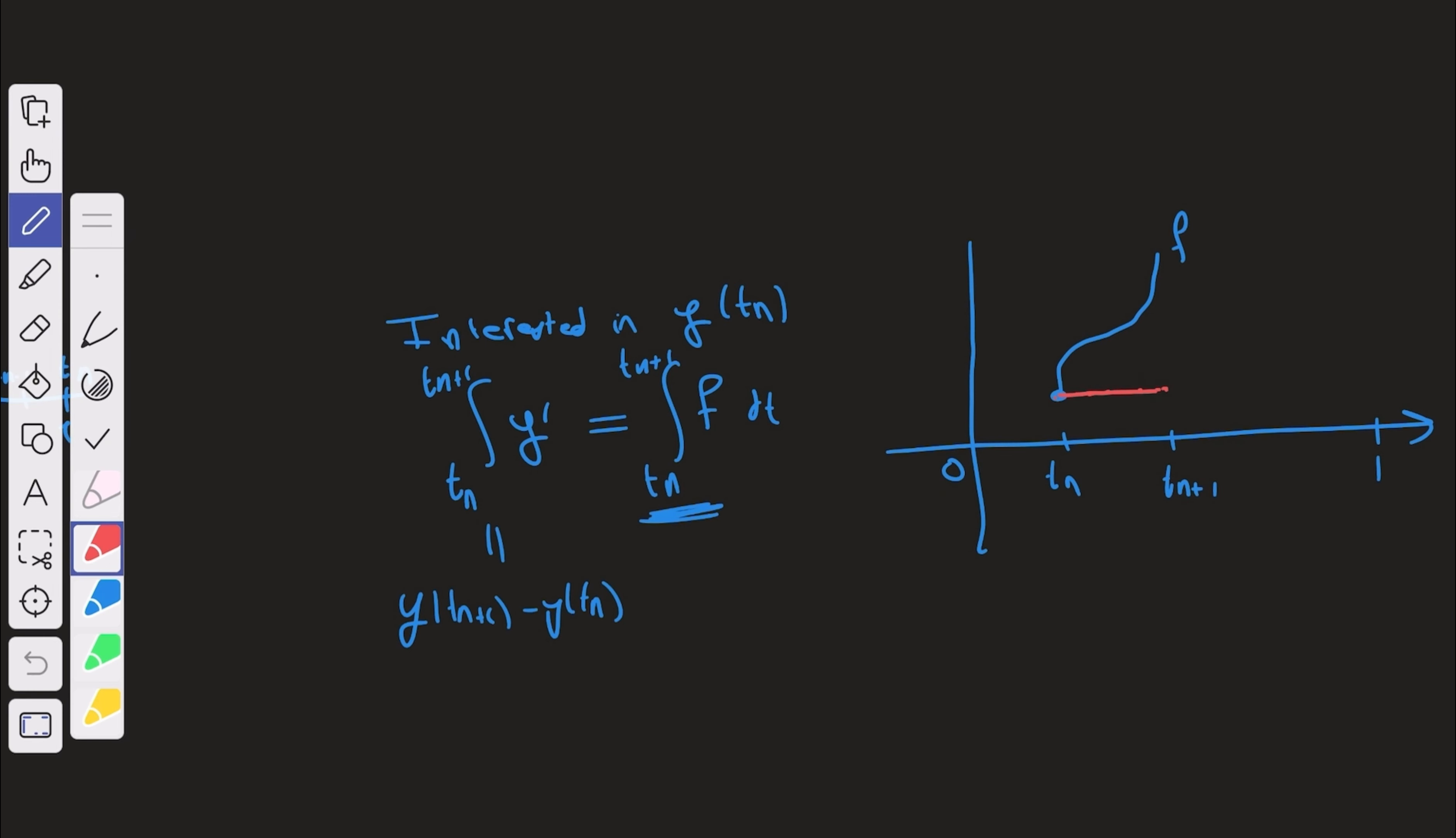So approximate the whole function by just this line. We approximate the whole thing by this line. So what we're saying here is that we're going to approximate this function on the interval tn to tn plus 1 by just the constant function, which is f at tn, yn, y at tn, dt.